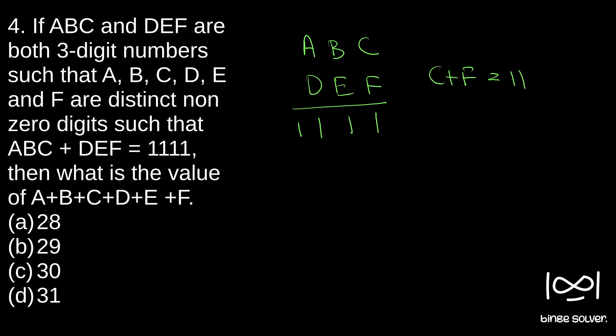In that case, we will get 1 in unit place and we will get a carryover 1 here. From that we can get B plus E has to be 10. B plus E again cannot be 0, so B plus E has to be 10.